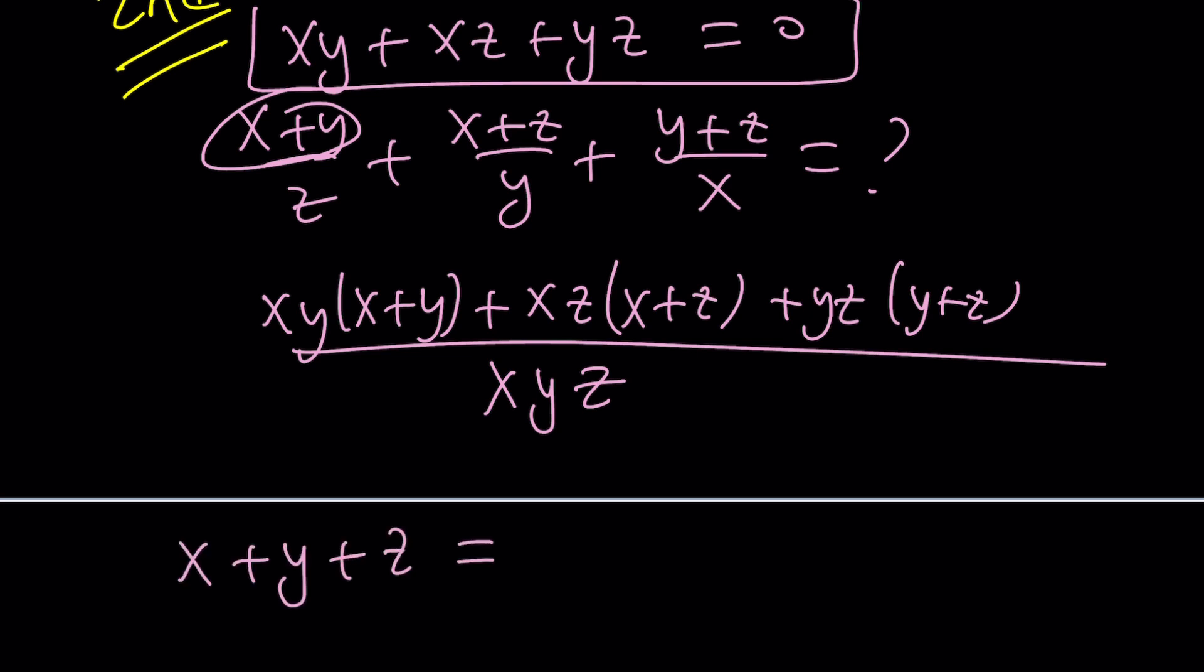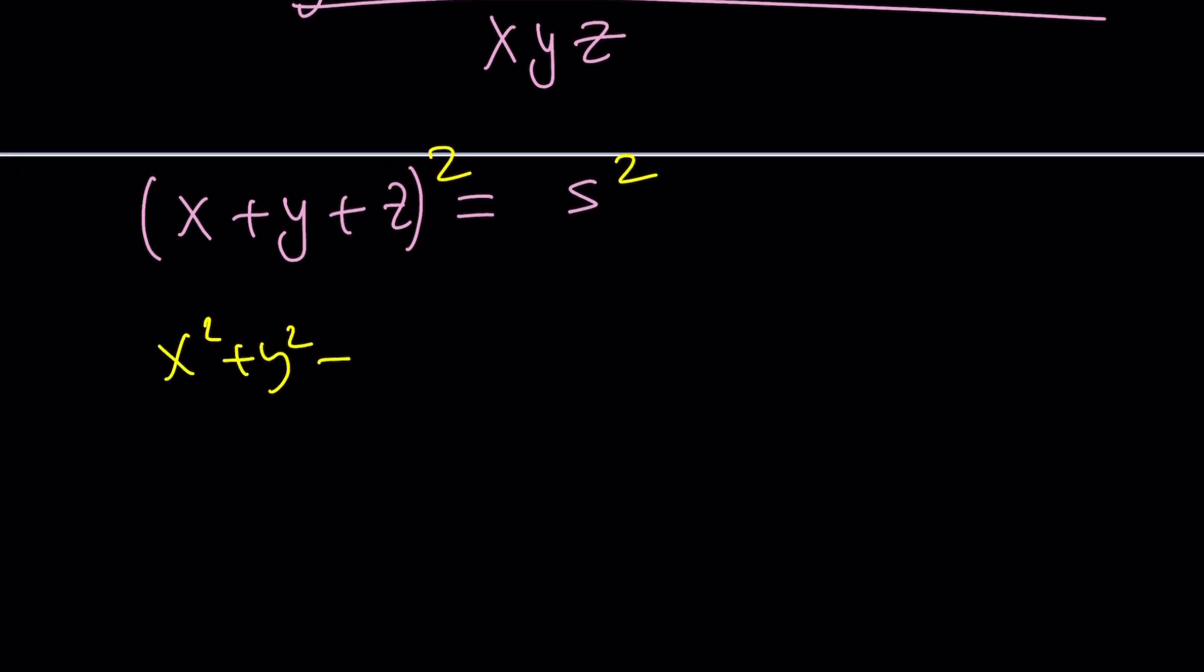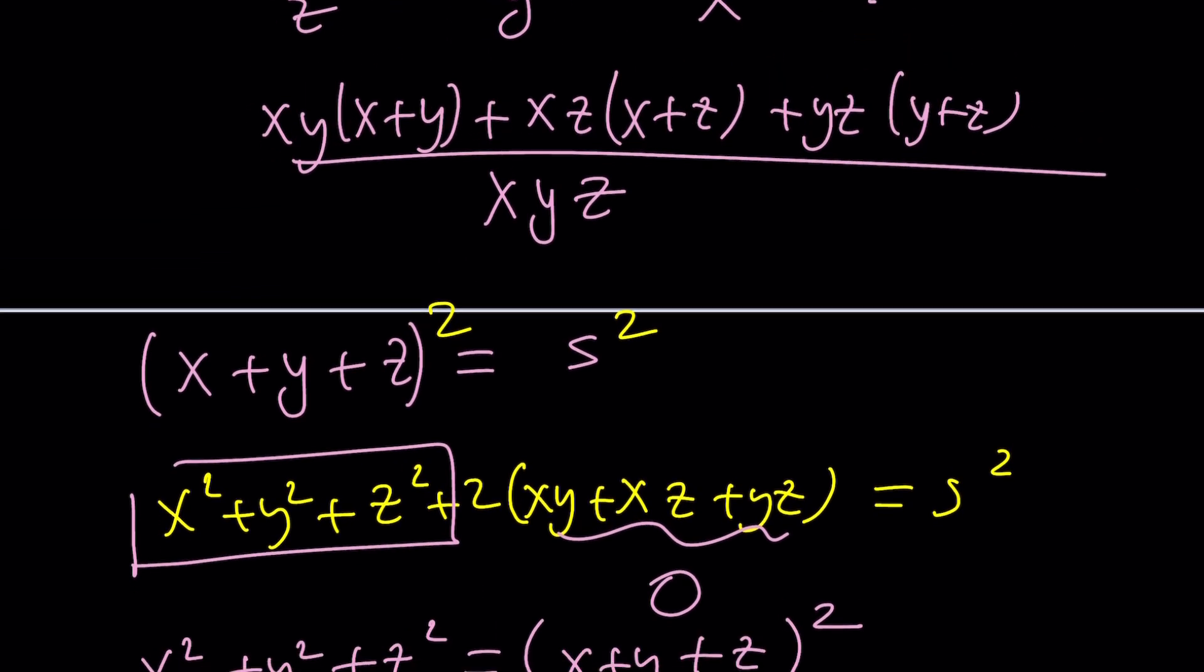Set x plus y plus z equal to something, how about s for sum, and then square both sides. If you square both sides that's going to give us something interesting. x squared plus y squared plus z squared plus 2 times the quantity (xy + xz + yz). We know that this is s squared but also this is equal to zero, it's given in the problem. So now we get something interesting that x squared plus y squared plus z squared is s squared which is (x+y+z) squared. Whether this is going to help or not I'm not sure but maybe we can do this. Replace x plus y with s minus z, this with s minus y and this with s minus x.